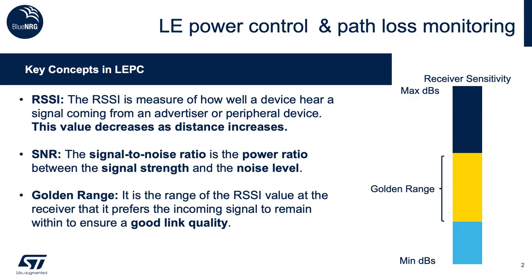Let me introduce you to a few key concepts that help understand how the LE power control algorithm works. Number one, the RSSI is the received signal strength indicator, which is a measure of the power of the signal reaching the receiver. Number two, the SNR is the signal-to-noise ratio — a power ratio between the signal strength and the noise level. And then the golden range: the golden range is an RSSI range where we can guarantee a good link quality between the two peers of the connection.